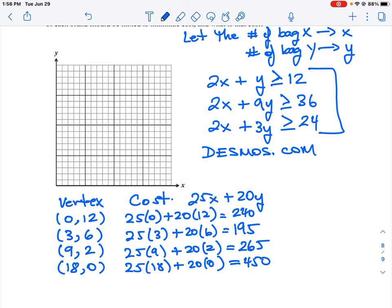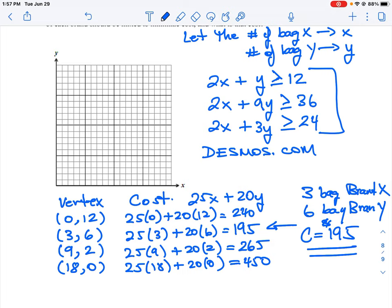So remember, we're looking to minimize our cost. So the minimum cost that meets all those nutrient requirements is when we have a combination of three bags of brand X and six bags of brand Y. So we have three bags brand X, six bags brand Y, and our cost is equal to $195. So that's our optimum amount of bags that we should purchase to produce our minimum cost, but yet meet those nutrient requirements of at least 12, 36 and 24.